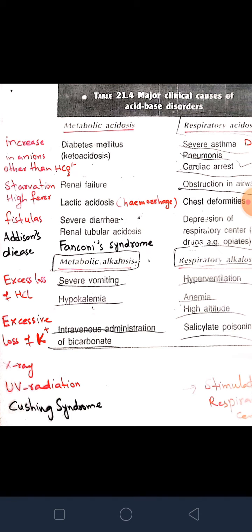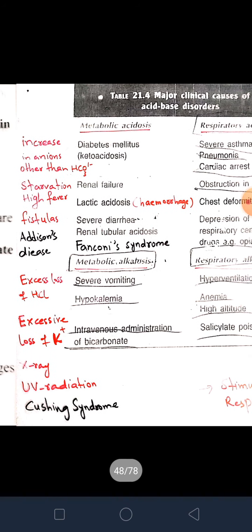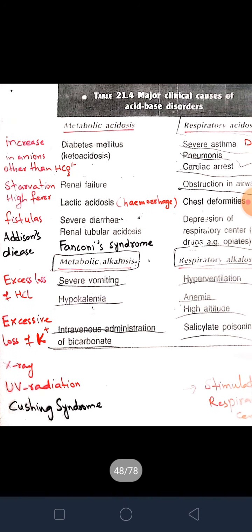Lactic acidosis is associated with acid retention in the body. Due to severe exercise and high muscular activity, more and more lactic acid is present in the blood. The decrease in pH due to lactic acidosis is compensated by the alkali reserve, so bicarbonate ion is utilized to fight against the high acidic load, again leading to metabolic acidosis.